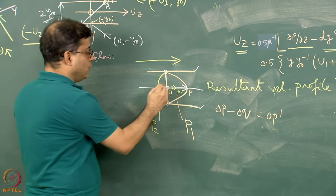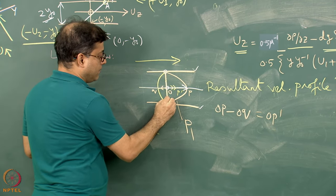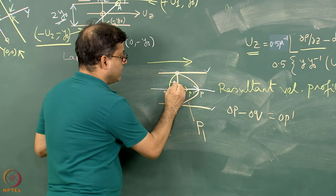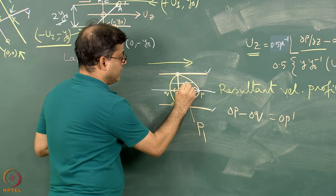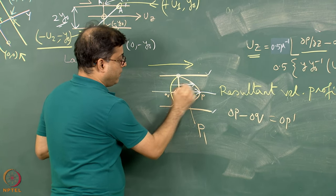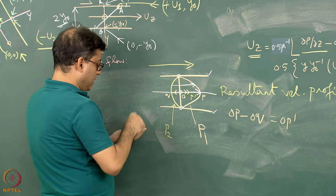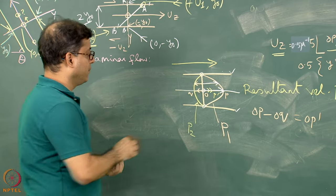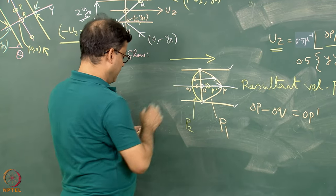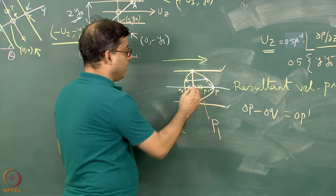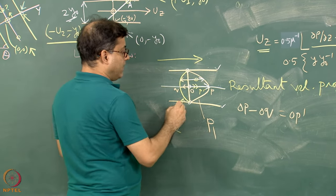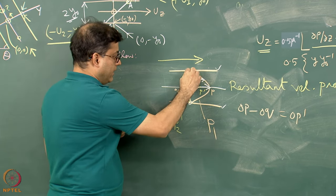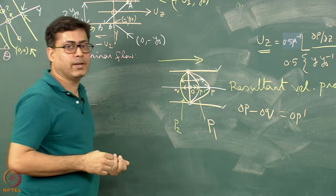So the resultant velocity is represented by OP dash. Similarly, if I do this exercise for each of these points — one component of flow and another counter component acting in the opposite direction — the resultant is this length minus that length, plotted in the appropriate direction. So I get a series of points and joining all those points gives, interestingly, another parabola.